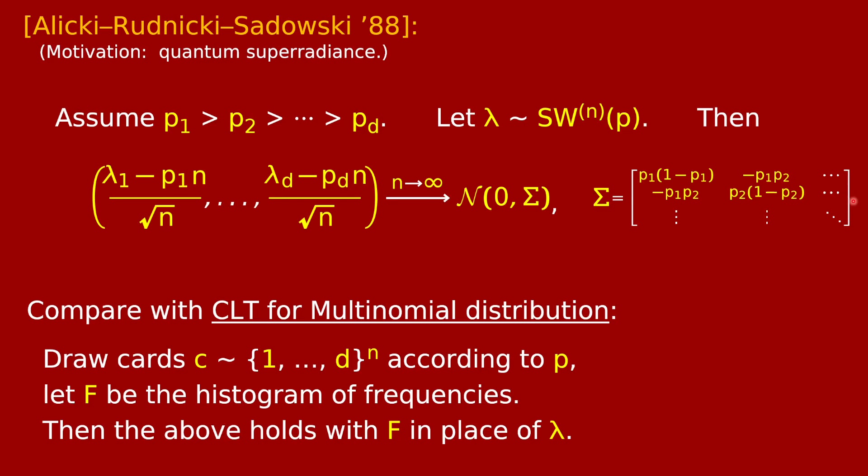So then you might think everything is really the same. Maybe the distribution of the row lengths of this Young diagram is pretty much the same as that of just the basic histogram, so maybe we can prove everything we possibly want to prove using very ancient statistics results. Well, that turns out to be not quite correct.